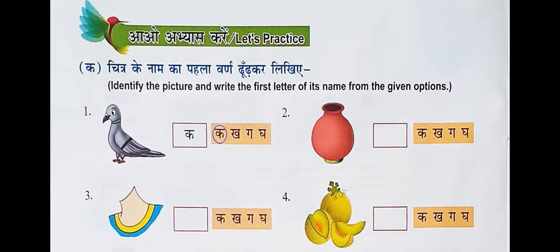For example, the first picture is Kabuter. Ka is circled and written in the box also.